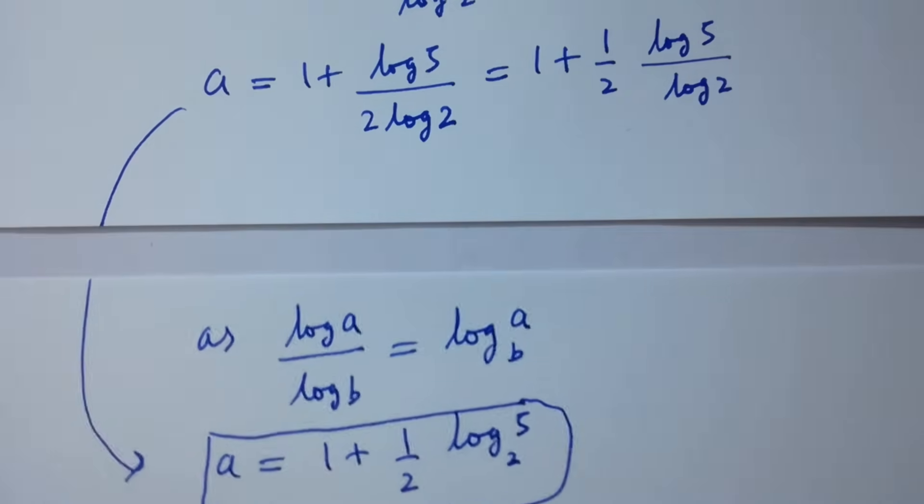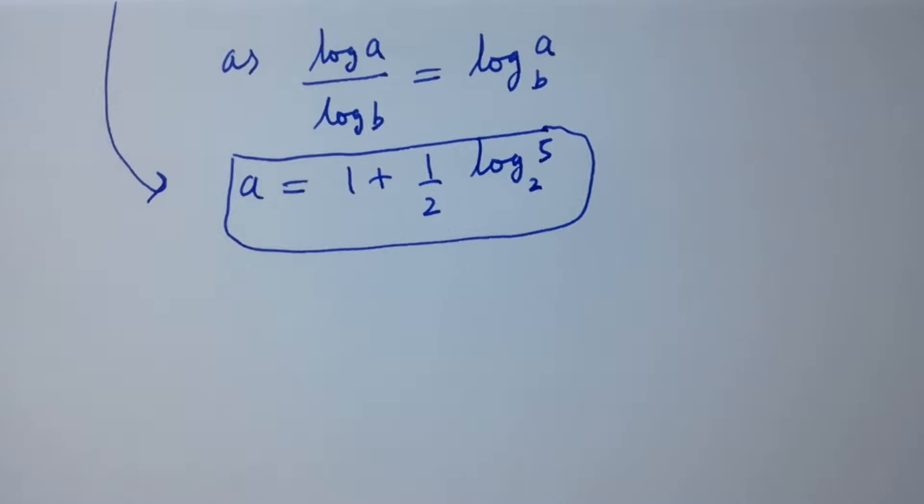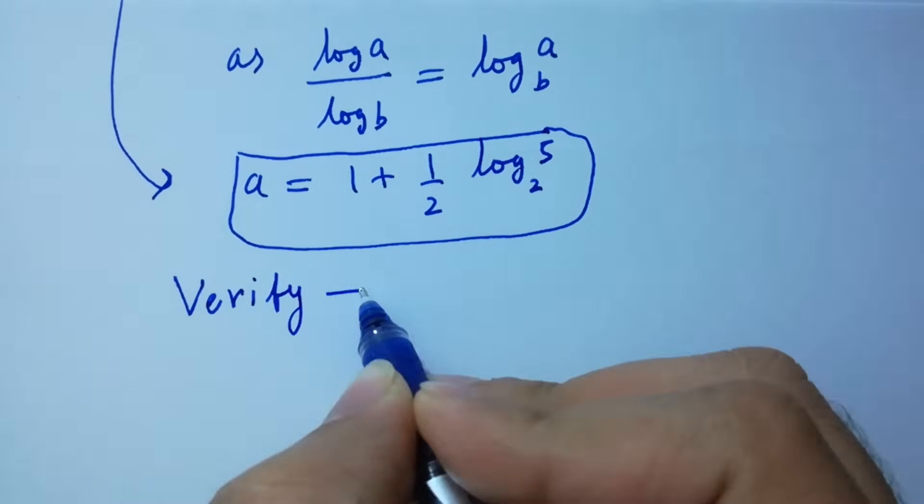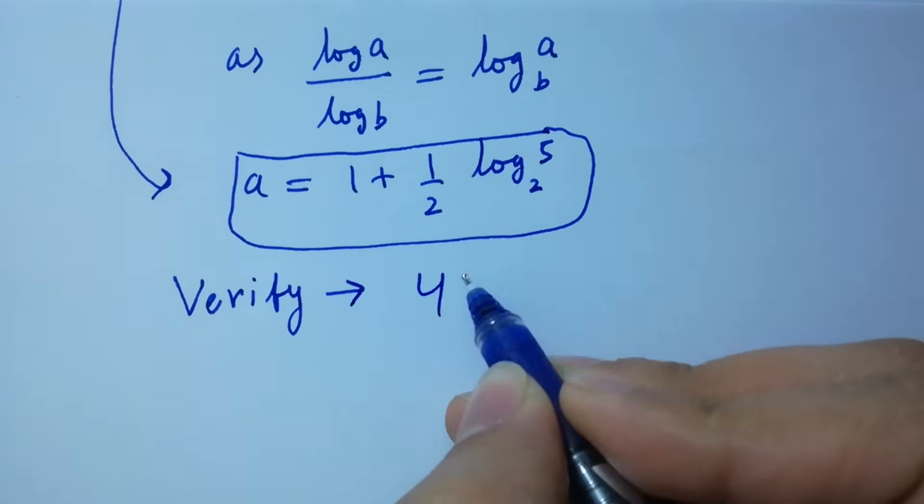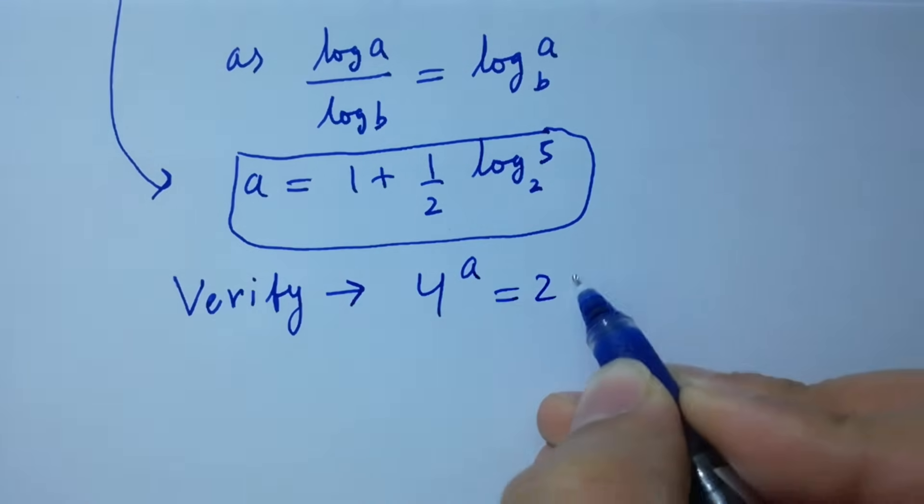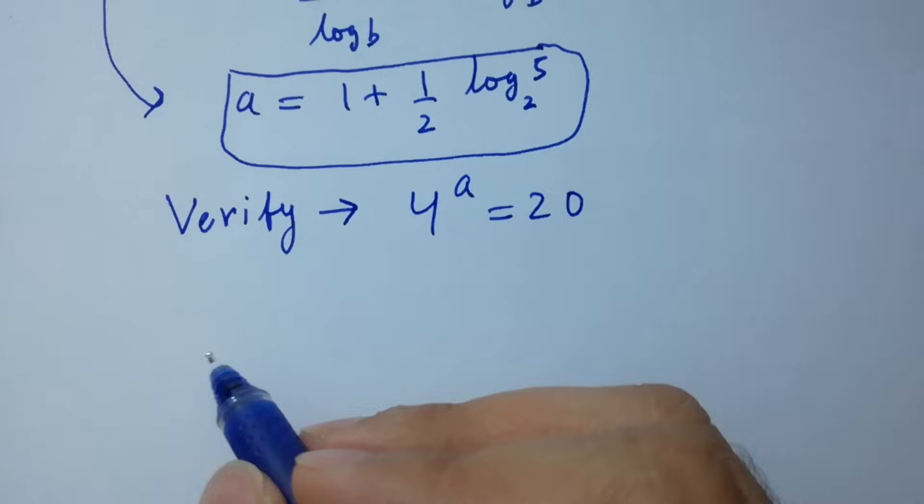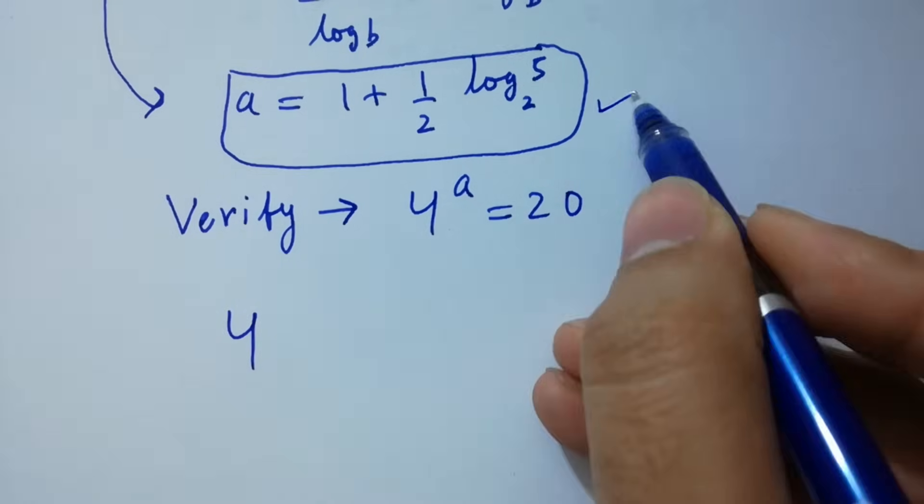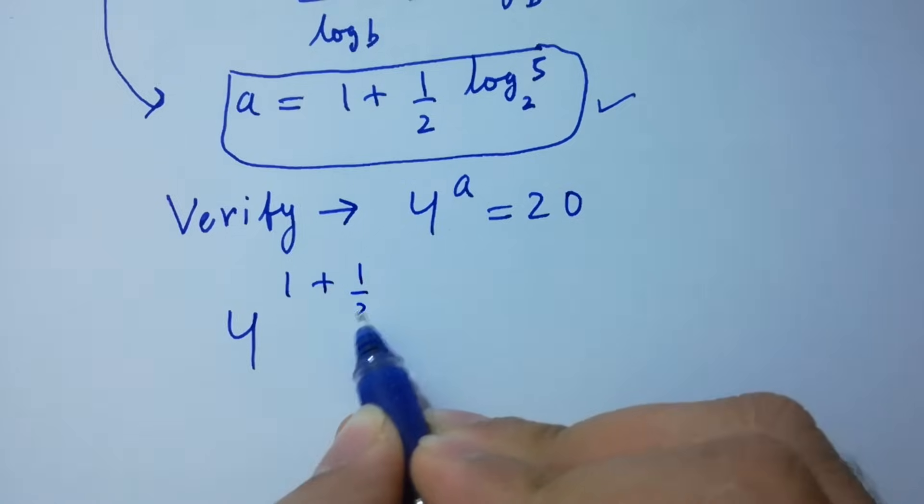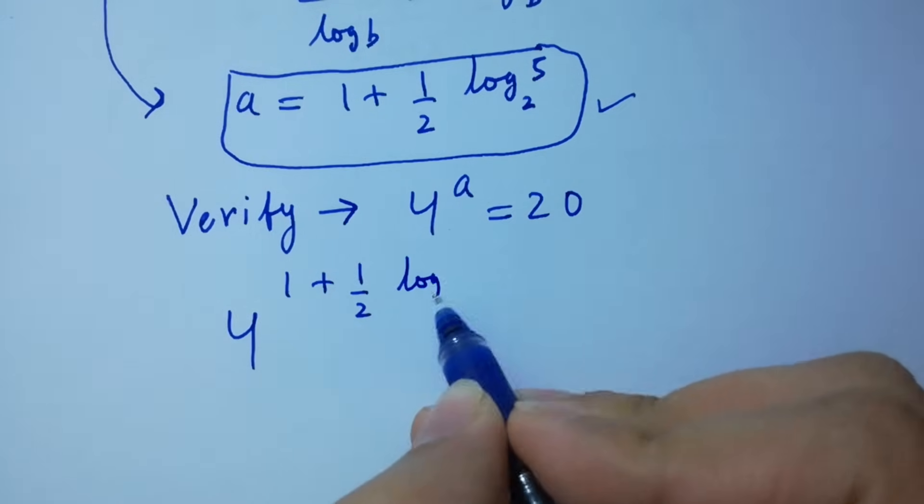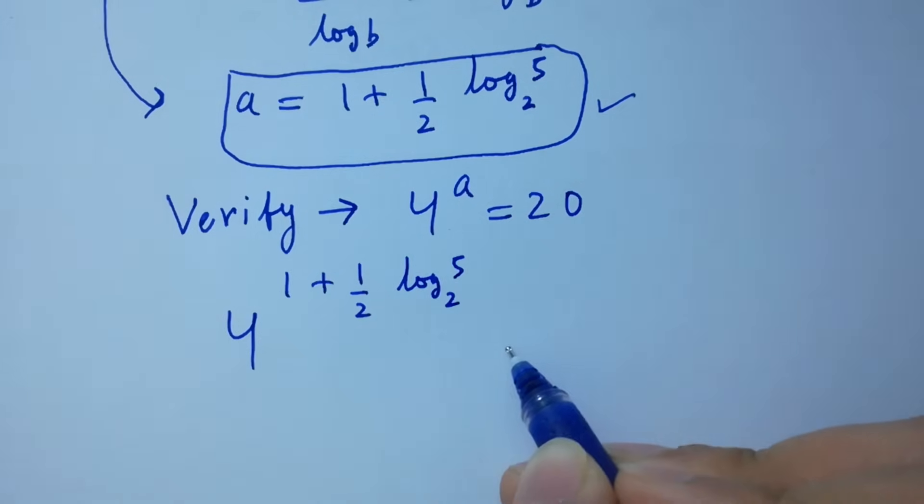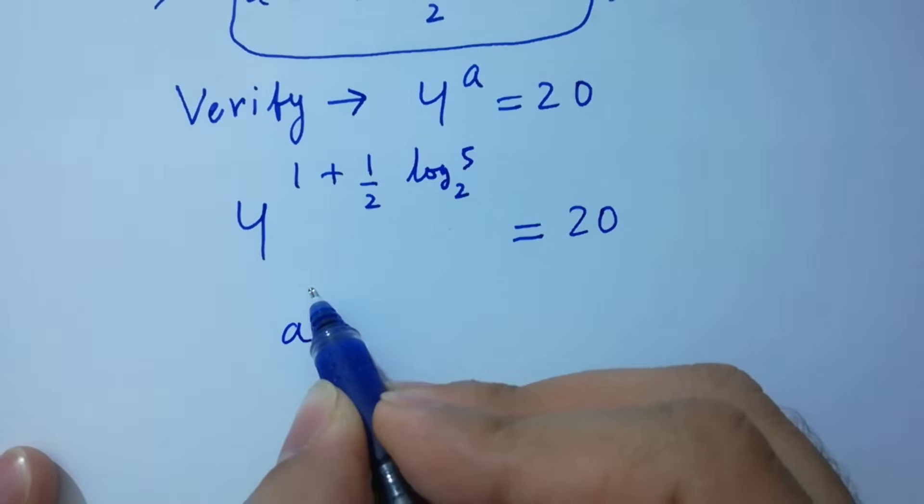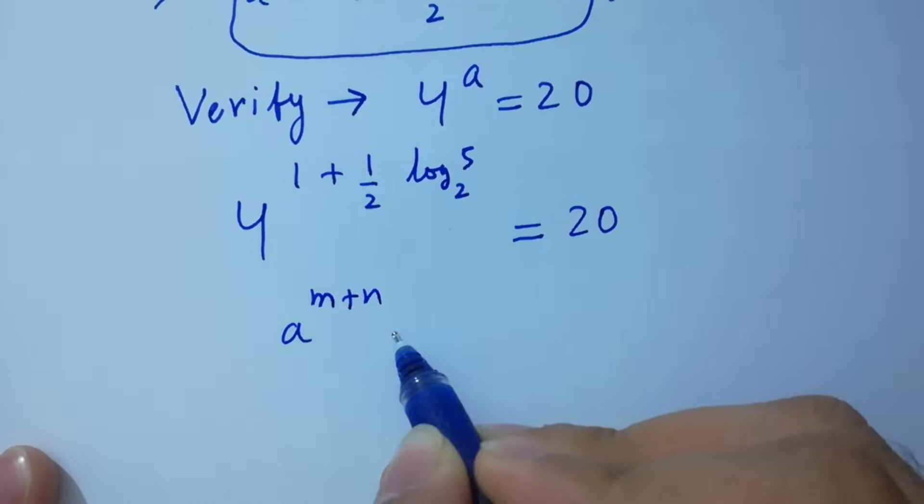In the next step I am going to verify. 4 to the power A equals 20. Put the value here: 4 to the power 1 plus 1 over 2 log 5 to the base 2 equals 20.